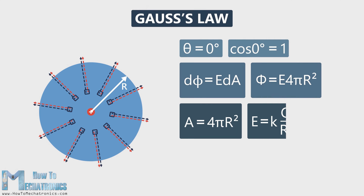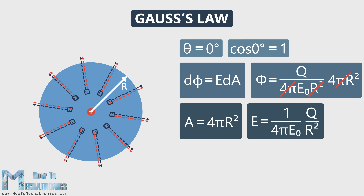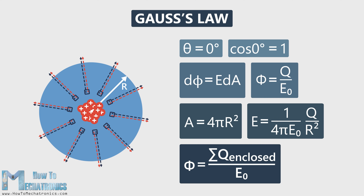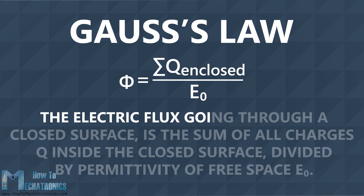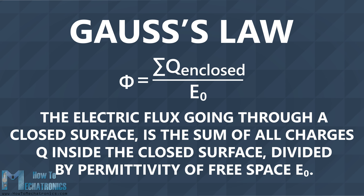From the previous videos, we know that E is equal to K times Q divided by R squared, which is equal to Q divided by 4Pi epsilon naught R squared. Here we can cancel out 4Pi R squared and we can notice that the total flux is equal to Q divided by epsilon naught, where epsilon naught is the permittivity of free space. The flux doesn't depend on the distance R — we would get the same result no matter the size of the closed surface around the point charge. What if we bring more charges inside the closed surface? The equation should also hold for any system of charges inside. This leads us to Gauss's law, which says that the electric flux going through a closed surface is the sum of all charges Q inside the closed surface divided by permittivity of free space epsilon naught.